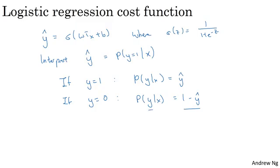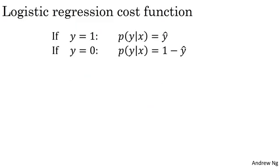So let me take these last two equations and copy them to the next slide. I'm going to take these two equations, which basically define p of y given x for the two cases of y equals zero or y equals one, and summarize them into a single equation. And just to point out, y has to be either zero or one because we're in binary classification.